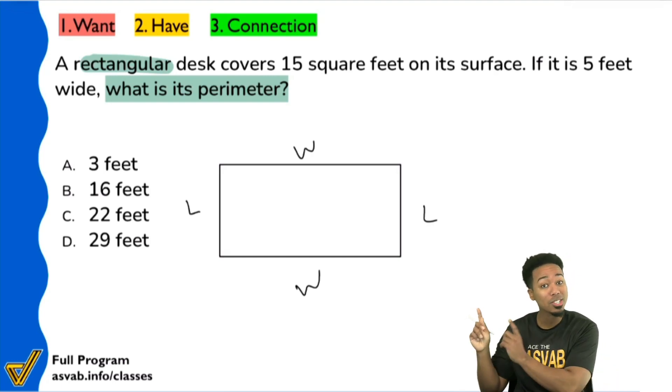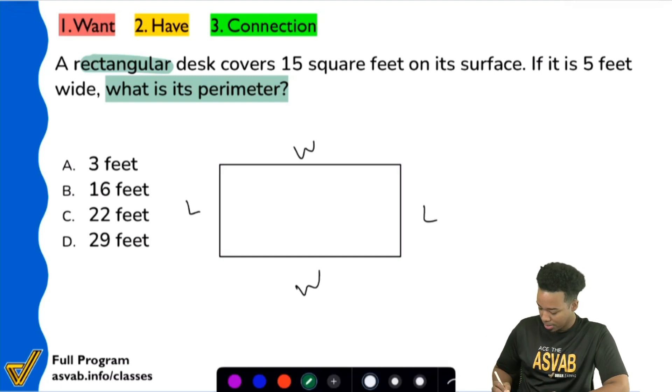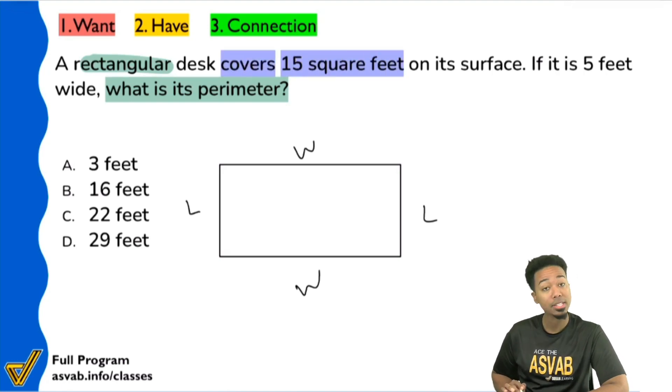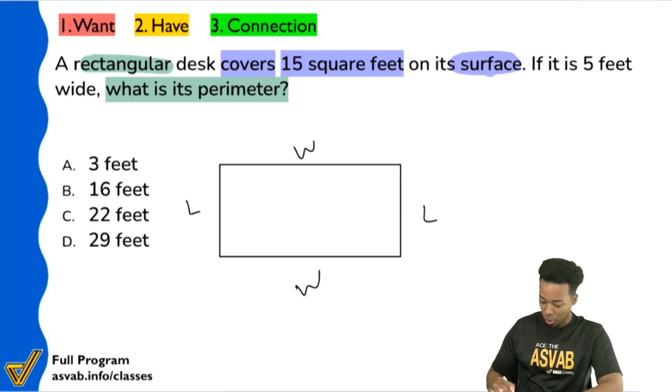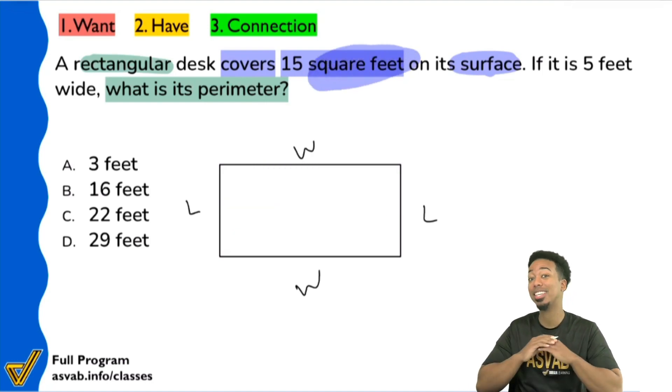Watch how this problem tries to trick you into using the information prematurely. So if we read the information, let's check this out. We see, I'm going to use blue here, it says the rectangular desk covers 15 square feet on its surface. Now these are all key words, all for area. So it covers, square feet.